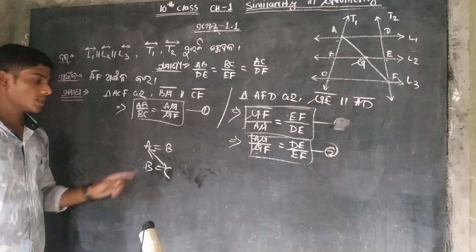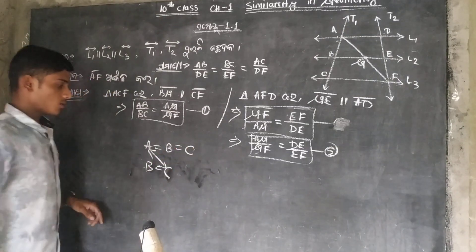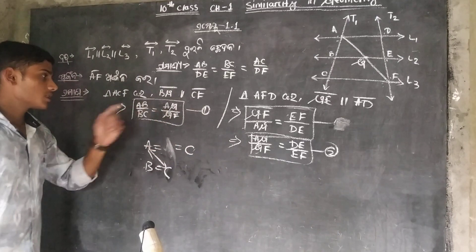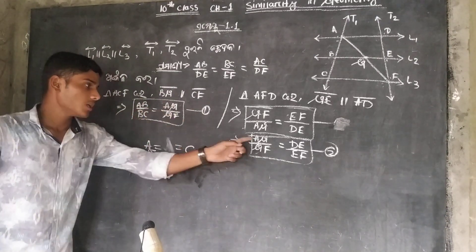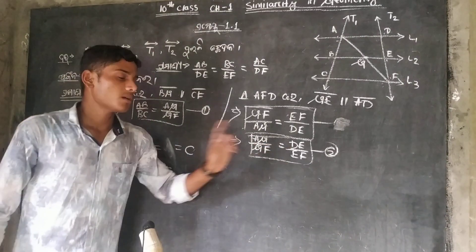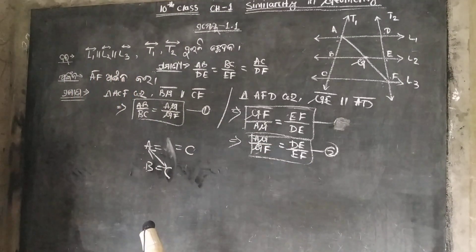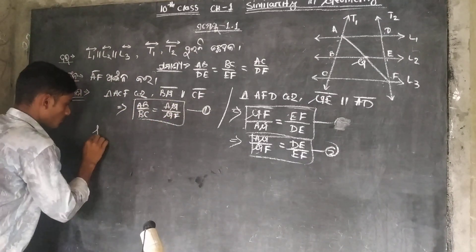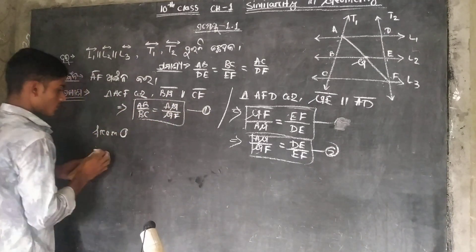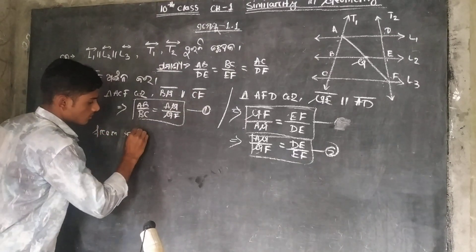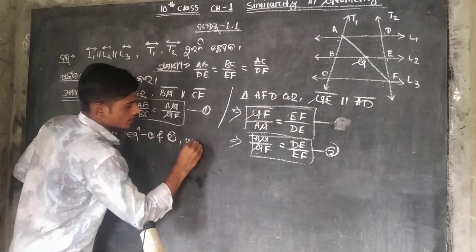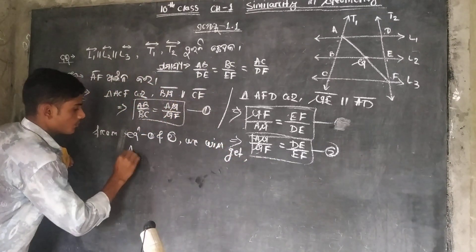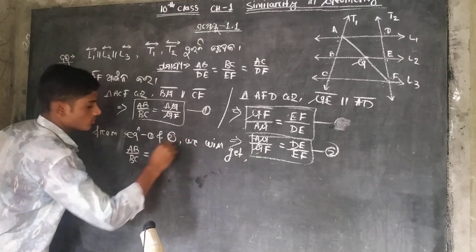So A is equal to B, B is equal to C. If we write A equals B and B equals C, then B equals C. This is the condition of equation 2. FG by GF is equal to C. FB by BC, DE by EF is equal to C. So FB by EF is equal to C. FB by GF is equal to C.